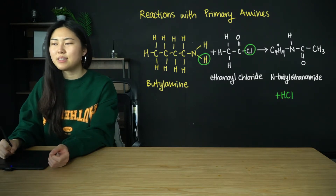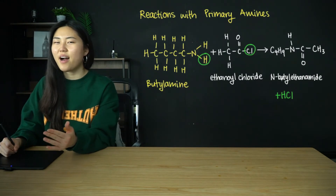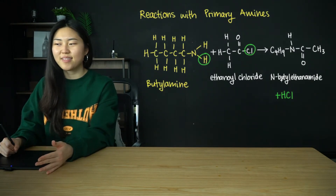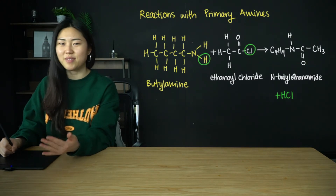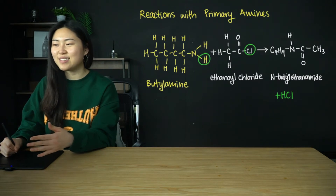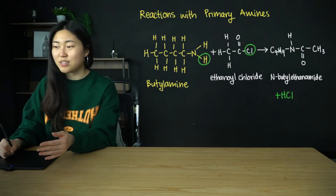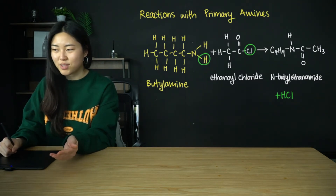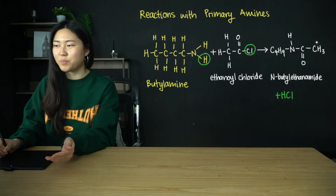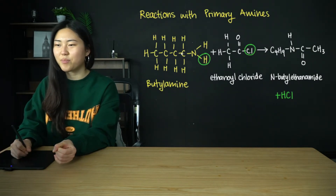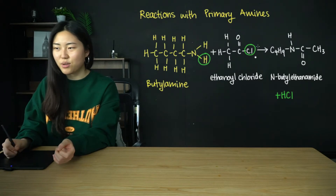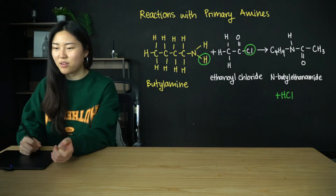This naming system is the nomenclature for amides. I don't think it's in the syllabus that you need to know how to name amides, but the N is bonded to the butyl group — that's N-butyl — and ethanamide refers to the group with two carbons that has the carbon double bond O. So with a primary amine and acyl chloride, you get an amide bond.